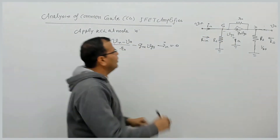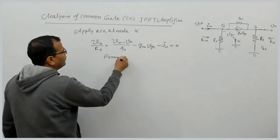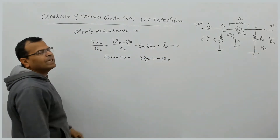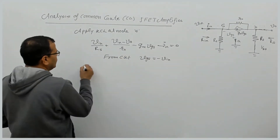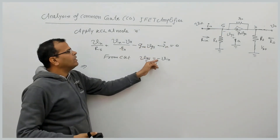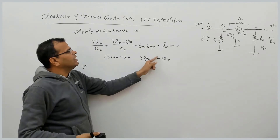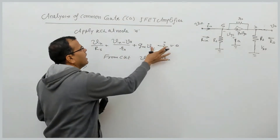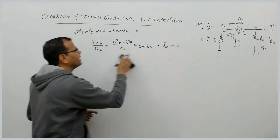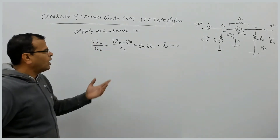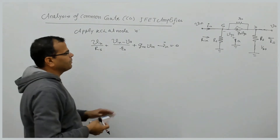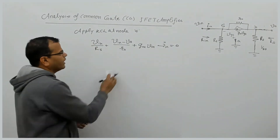From the circuit, the voltage vgs is equal to minus v_in, or equivalently v_in equals minus vgs. So wherever vgs appears in the equation, we can replace it with minus v_in, which makes the dependent current source term become positive, giving gm·v_in. This substitution is made directly in the KCL equation at node S to avoid rewriting the whole equation.